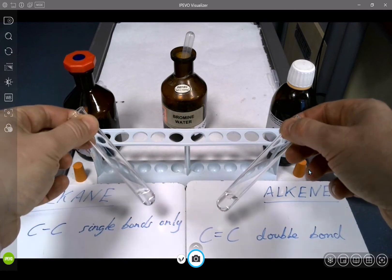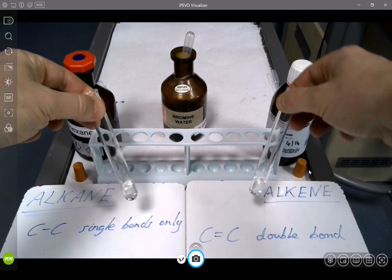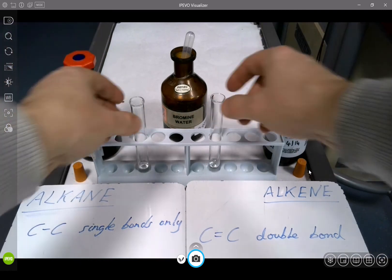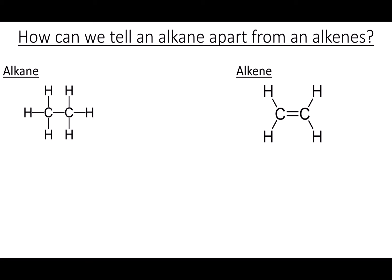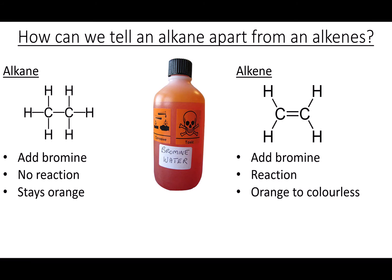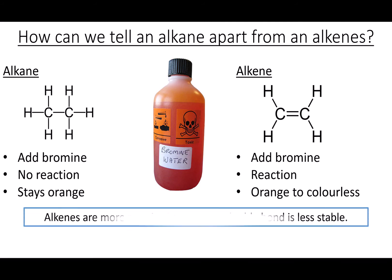Here we have the two samples. We've got alkane on this side and alkene on the right. They look exactly the same. So here's how we test for the two. Firstly we add some bromine water, which is orange. With the alkane there's no reaction, so the solution stays orange. And with an alkene there is a reaction, and we see a colour change from orange to colourless. This happens because of the double bond, which is reactive — it's not as stable.